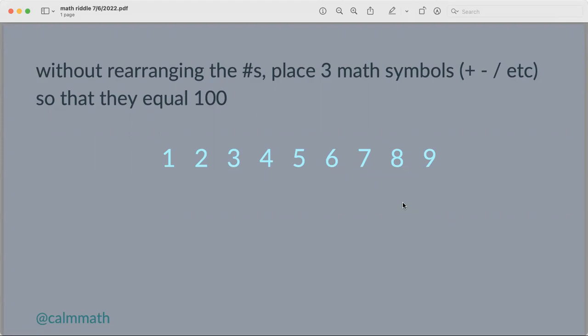So this particular problem, without changing the order of these numbers, place three math symbols like plus minus so that they equal 100. And where to even start? If you could rearrange the numbers or use more than three math symbols, it might be easier. And there could be a lot of different variations if you want to play around with that after this activity.